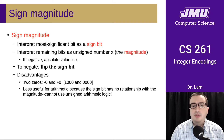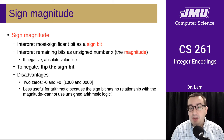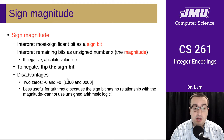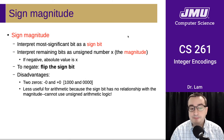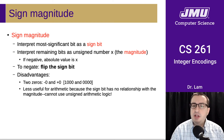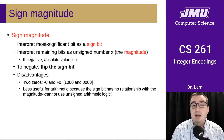There are some disadvantages though. There are two zeros — both negative zero and positive zero are possible. For instance, with four bits you can leave all the other bits zero and either set the first bit, giving negative zero, or leave the first bit unset, giving positive zero. This is also far less useful for arithmetic because the sign bit really has no relationship with the magnitude, so you can't reuse any unsigned arithmetic logic.